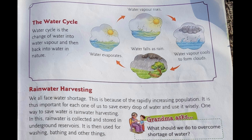The next topic is rainwater harvesting. We all face water shortage because of the rapidly increasing population, and water levels in the soil are going down. It is important for us to save even a single drop of water. One way to save water is rainwater harvesting.